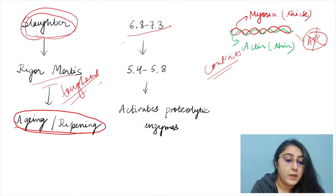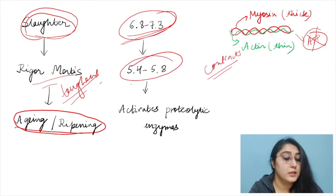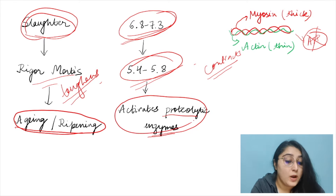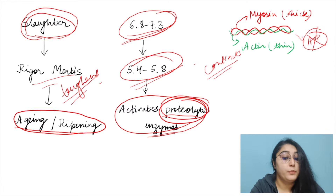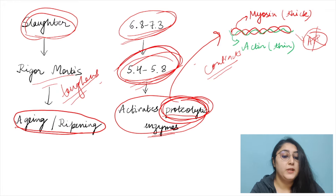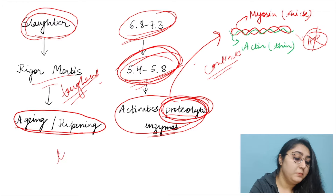To deal with this problem, we have aging or frightening — giving some time to the meat. The animal's pH of around 6.8 to 7.3 drops during rigor mortis to 5.4 to 5.8. This drop in pH activates certain proteolytic enzymes that help break down the actin-myosin linkages which could not break due to absence of ATP.